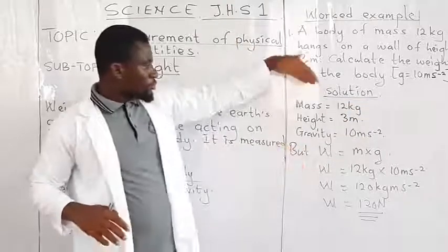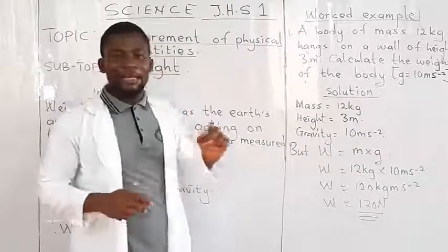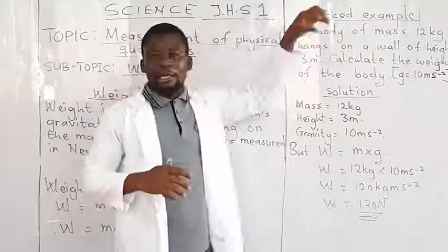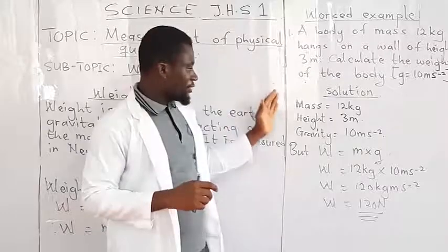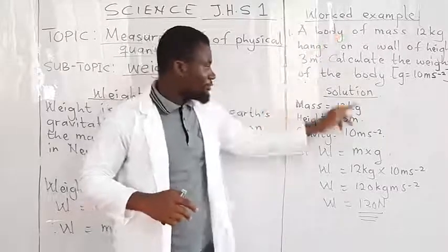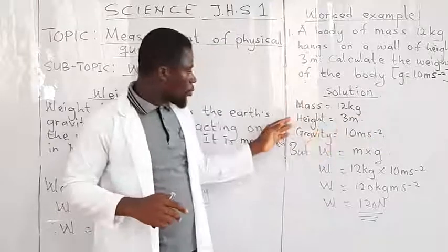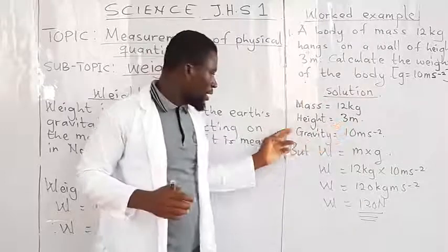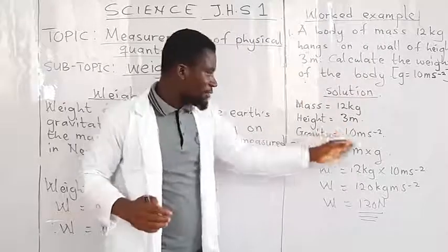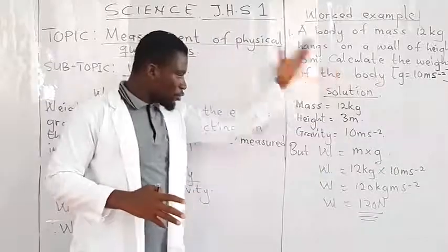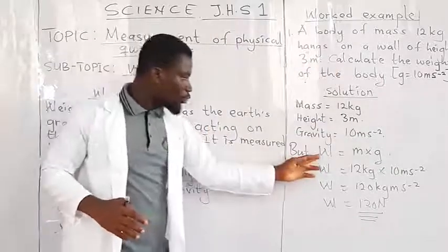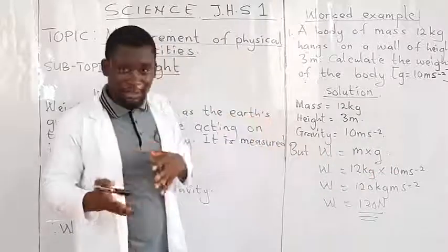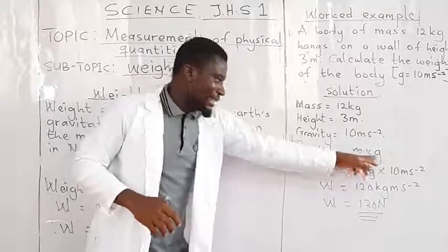Now, let's come back to this one. So how do we solve this? Any time you are given such questions, try as much as possible to identify the things you are given from the question. The first one is mass. What is the mass? From the question, you have 12 kilograms. Were you given height? Well, you have height. So let's record that one also: 3 meters. Gravity was given as 10 meters per second square. Now let's go back to the formula. It says that weight equals mass times gravity. Did we see mass times height and gravity? No. Very good. We only saw mass times gravity.